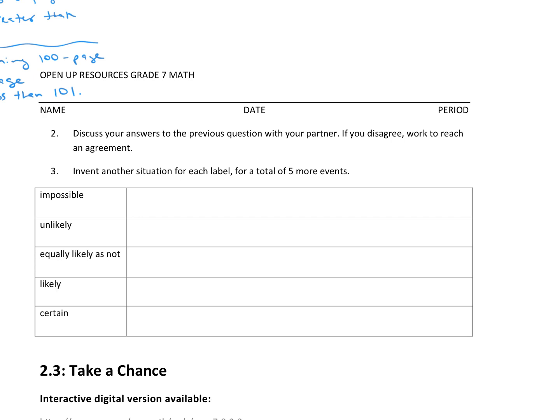So, impossible. Something that's impossible is finding a rectangle with five sides, right? It's not a rectangle if it has five sides, so that's impossible.